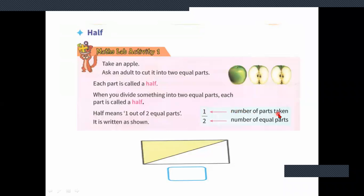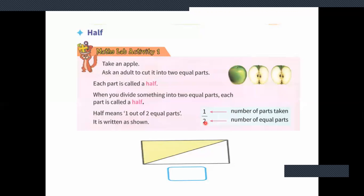The upper number, one, is the number of parts taken, and the down number, two, is the number of equal parts. You can also call the upper number as numerator and the down number as denominator. The middle line which divides both the numbers is called as fraction bar or division bar.